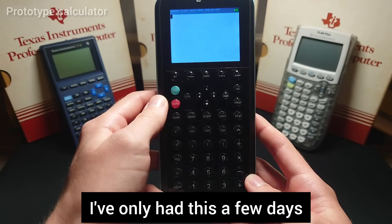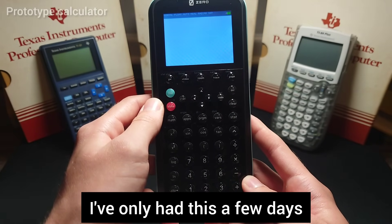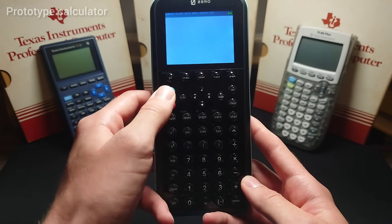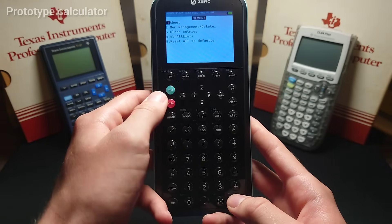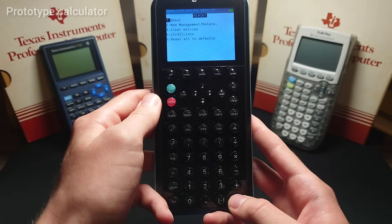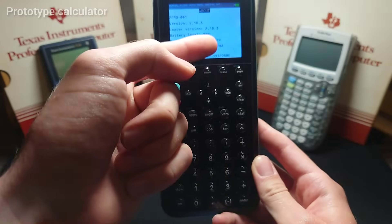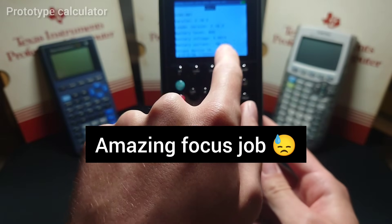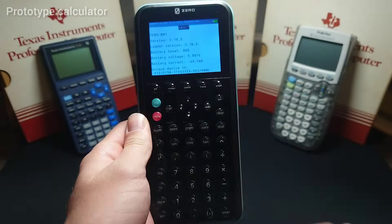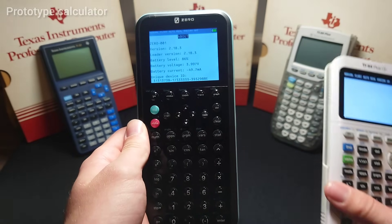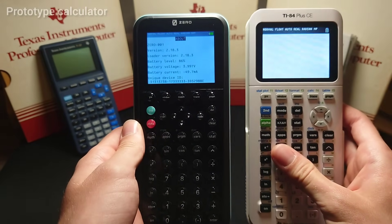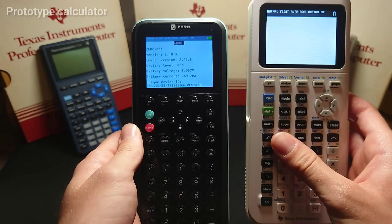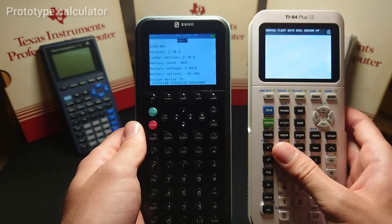I haven't had it long enough to do a proper battery test, however, the Zero does show you a snapshot of its current power draw. You press 2nd, MIM, and press About, and right here it shows you the current draw. Now, this is a 2200 mAh battery, which is almost twice as large as the 1,200 mAh battery in the TI-84 Plus CEs.